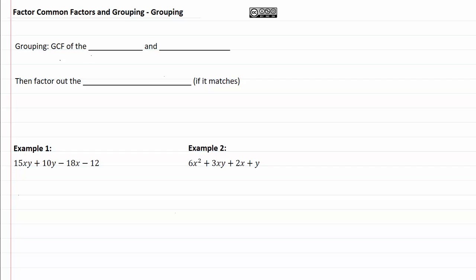When we group, we're going to take the greatest common factor out of the first two terms, and then the greatest common factor out of the second group of two terms. And then we'll factor out the GCF, which is going to be a binomial only if it matches.